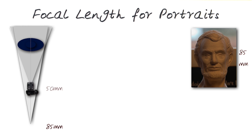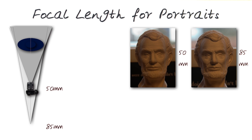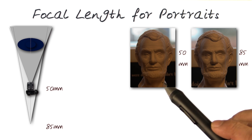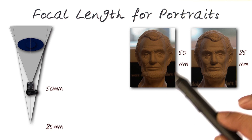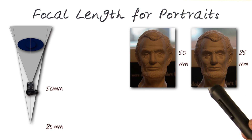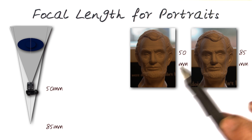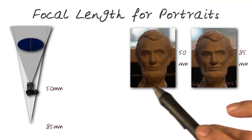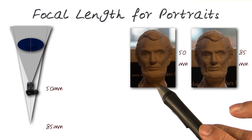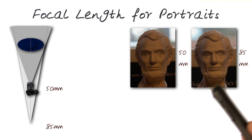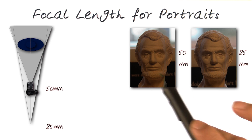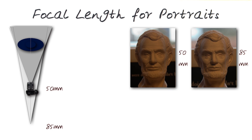I move closer. This is a 50 millimeter lens, now looking at the same subject. Here is the output. It does get darker a little bit for a variety of reasons. We'll be looking at that in more detail when we talk about the exposure triangle.